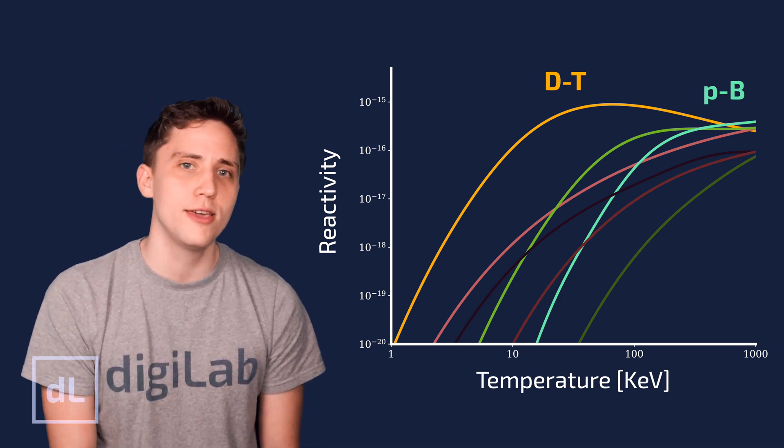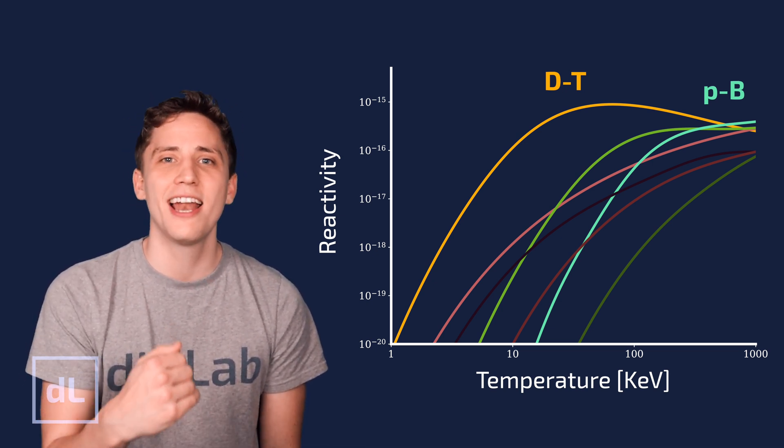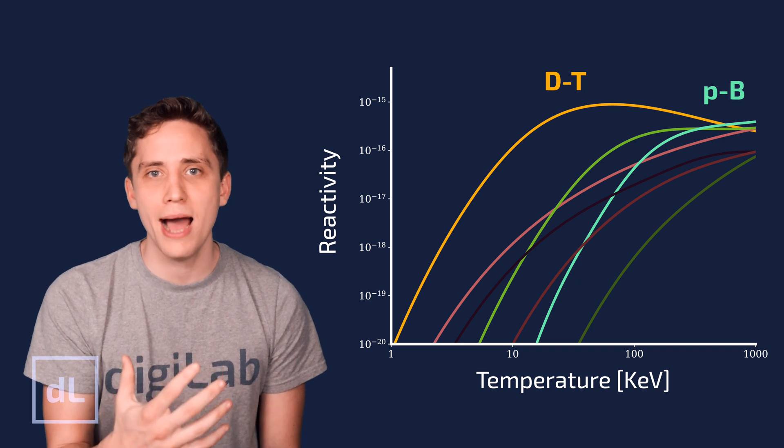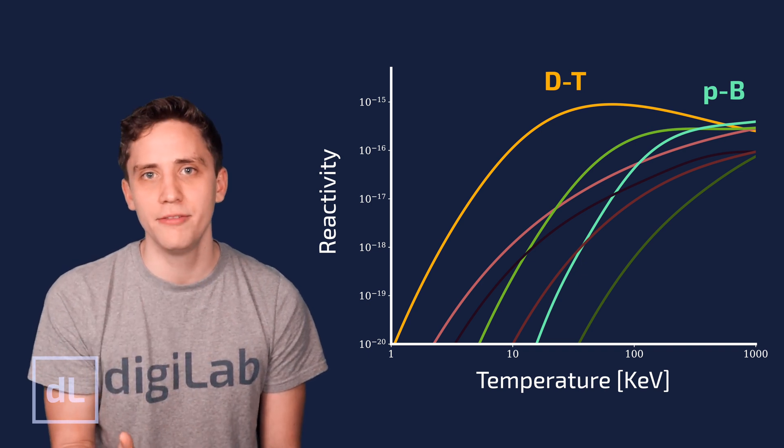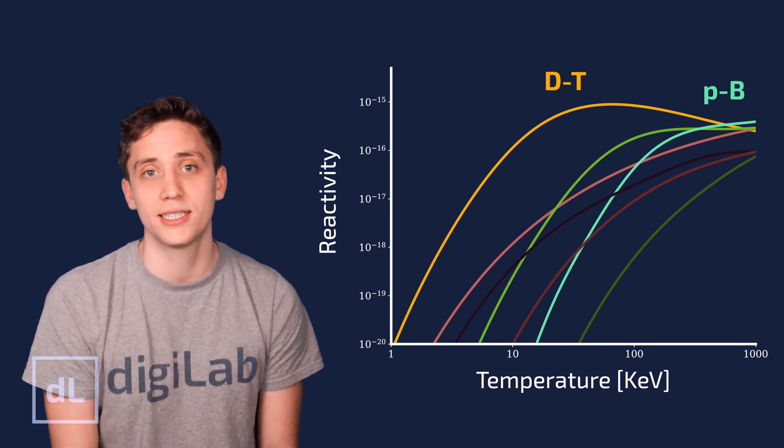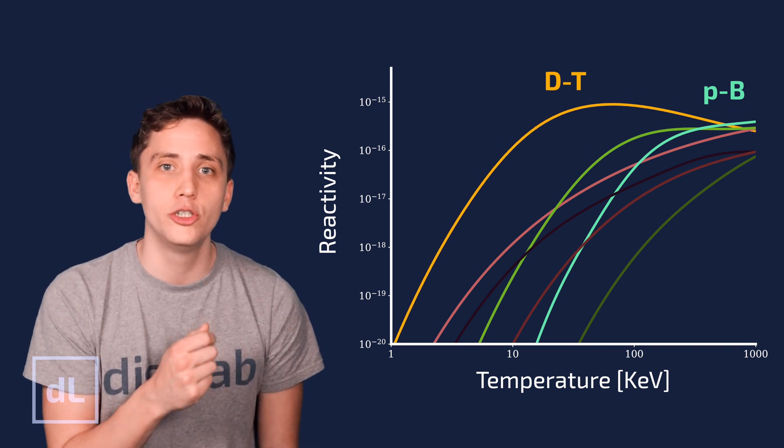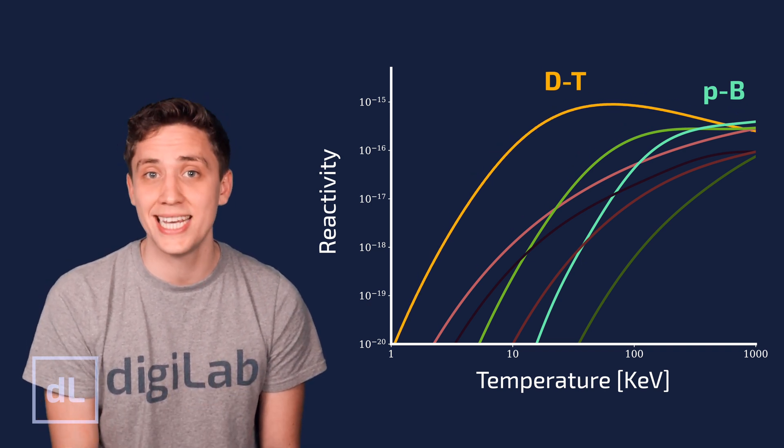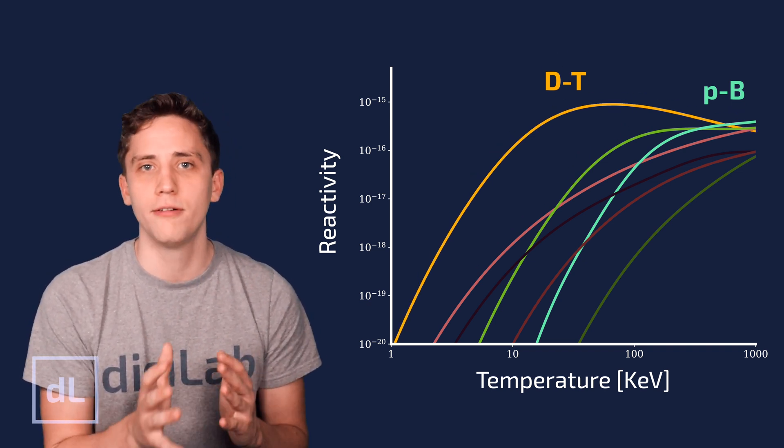And firstly, one important thing you can see from this figure is that the fuel mixture with the absolute highest reactivity or the highest chances of successful fusion reaction is this here, deuterium, tritium, or DT, two isotopes of hydrogen. This essentially means they're forms of hydrogen with a different number of neutrons in the nucleus.